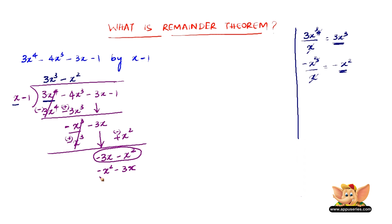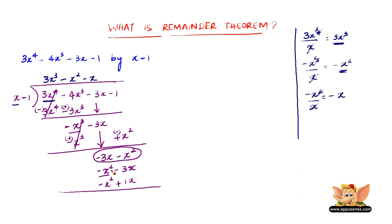Dividing minus x square by x gives minus x — the third term of the quotient. Minus x into x is minus x square, and minus x into minus 1 is plus x. After subtracting and changing signs, this term cancels, and we get minus 3x minus x which is minus 4x. We then pull down the last term, minus 1.